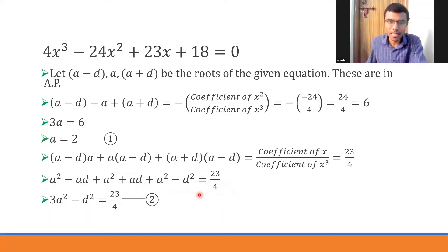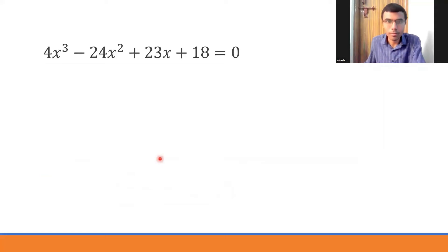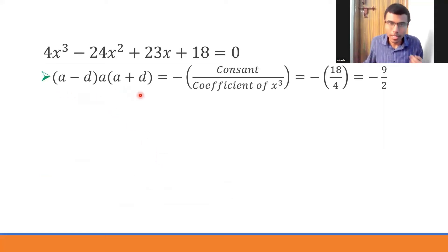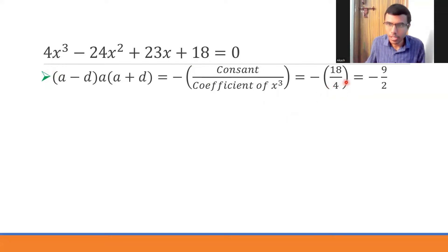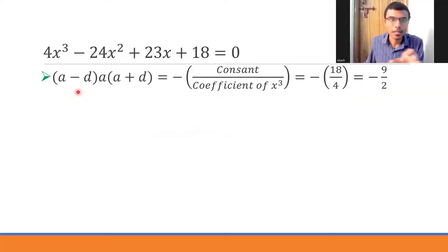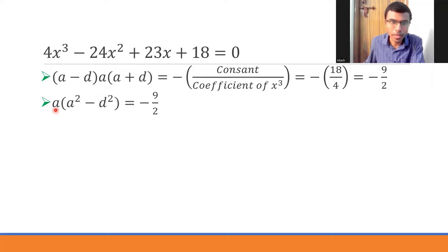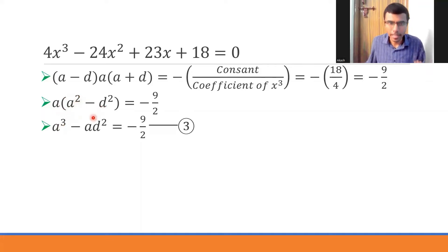Next, the product of all roots: (a minus d)(a)(a plus d) equals minus the constant divided by the coefficient of x³. The constant is 18 and coefficient of x³ is 4, giving minus 18 by 4, which simplifies to minus 9 by 2. On the left side, (a minus d)(a plus d) is a² minus d², so a(a² minus d²) equals minus 9 by 2, giving a³ minus ad² equals minus 9 by 2. I'll mark this as equation 3.